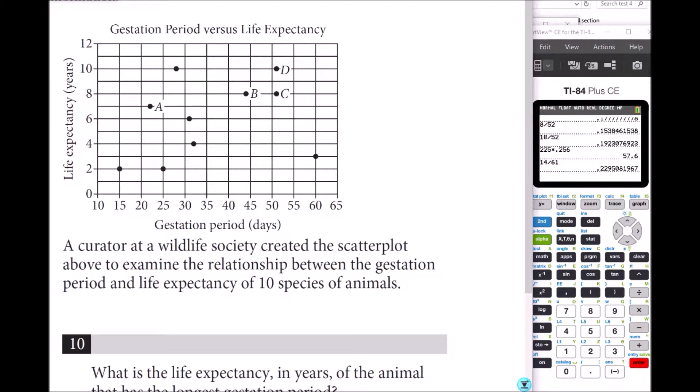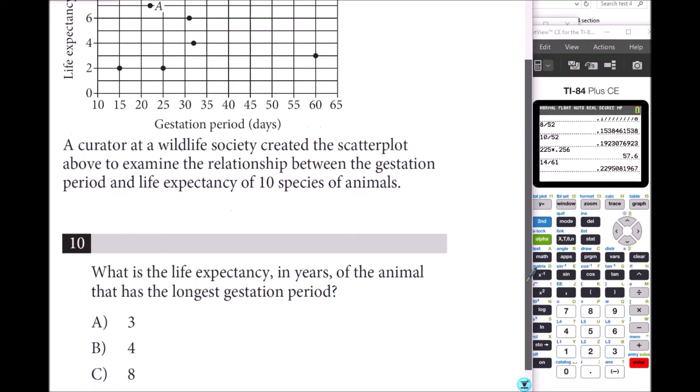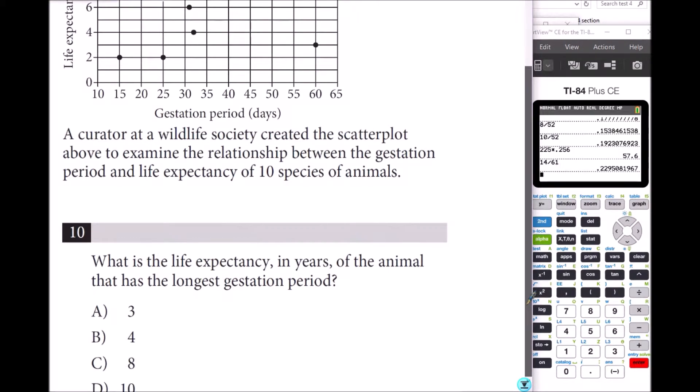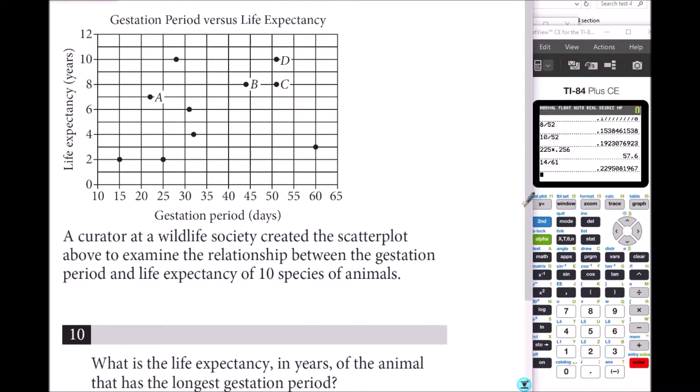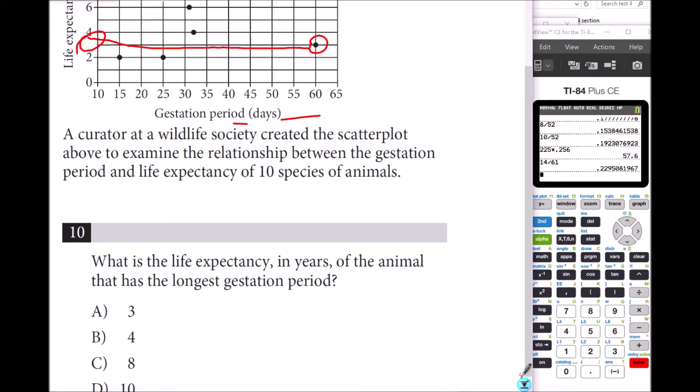Number 10: A curator at the Wildlife Society created a scatterplot to examine the relationship between gestation period and life expectancy of 10 species of animals. What is the life expectancy in years of the animal that has the longest gestation period? The longest gestation period is this one right here, which is 3. So A, 3.